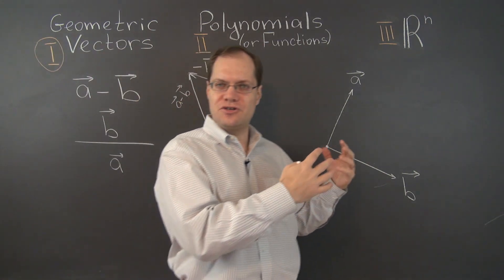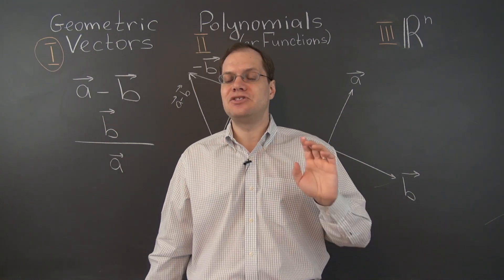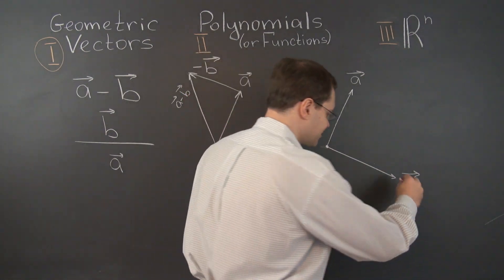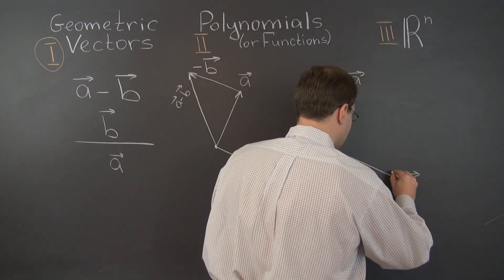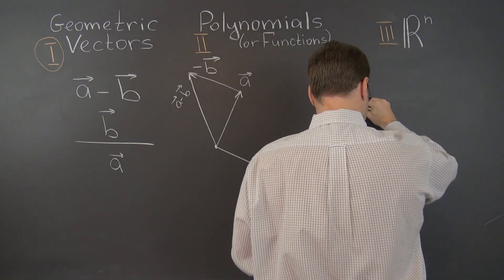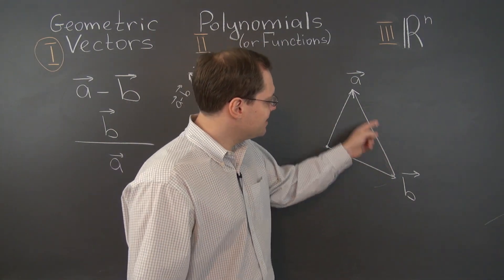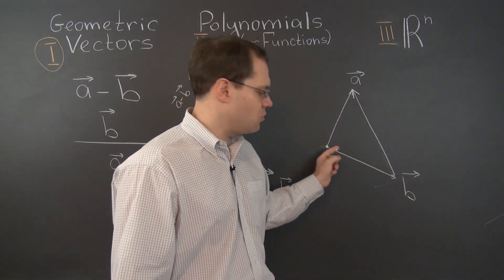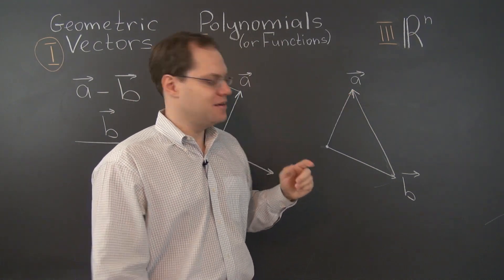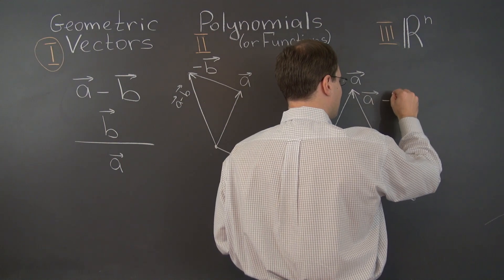So now going back to the geometric picture, we're looking for a vector such that if you were to add it to B, you get A. And of course, by the tip-to-tail rule, it has got to be this vector right here pointing this way because this vector plus B, so B plus this vector equals A. So this vector right here has got to be A minus B.